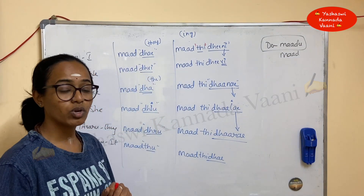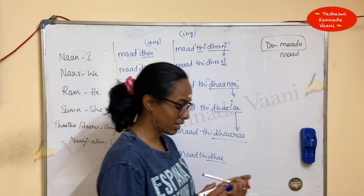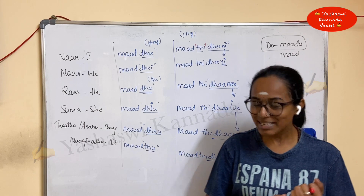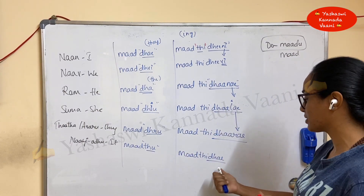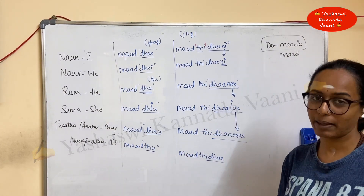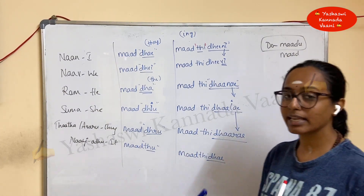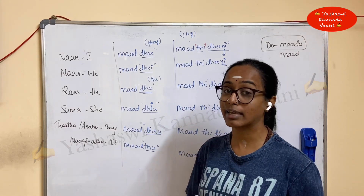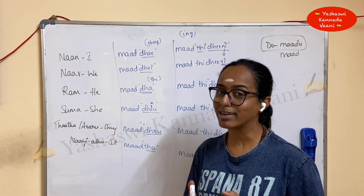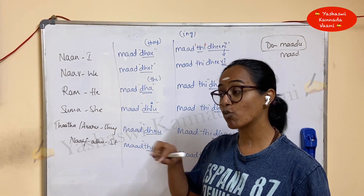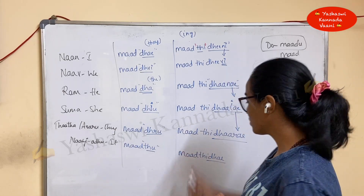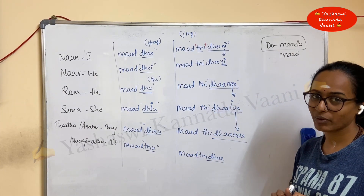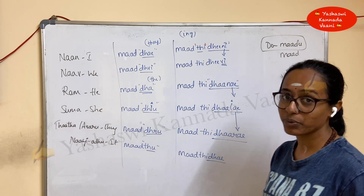For animals — 'parana' — dog: 'naai maad ti de.' Just as you would say 'channa ghi de,' the same concept applies. Naai oota maad ti de, naai watch maad ti de, naai run maad ti de, naai walk maad ti de. You can use all these concepts here.